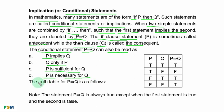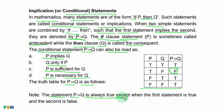The truth table for 'if P then Q' is as follows. With the usual arrangement of P and Q, the outcome is false only when P is true and Q is false. The statement 'if P then Q' is always true except when the first statement is true and the second is false.